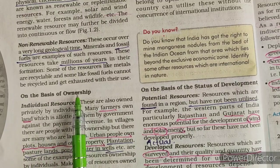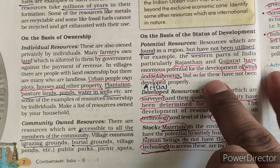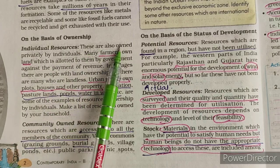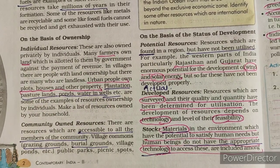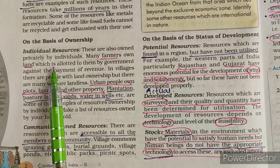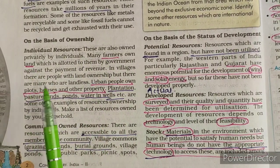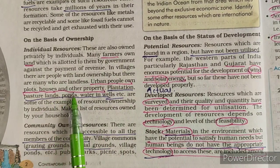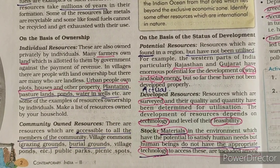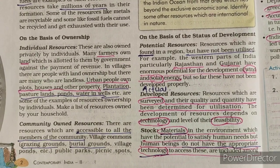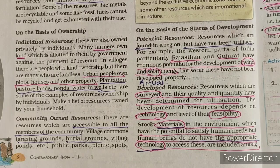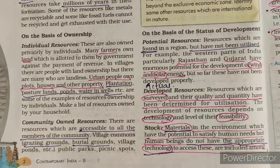On the basis of ownership, there are four types. First is individual resources — resources which are owned by private individuals. Farmers own their own land, and that land is their own resource. In urban areas, people own plots, houses, and other property. Plantation, pasture land, pond, and water wells are also individual resources, as they are owned by individual persons.